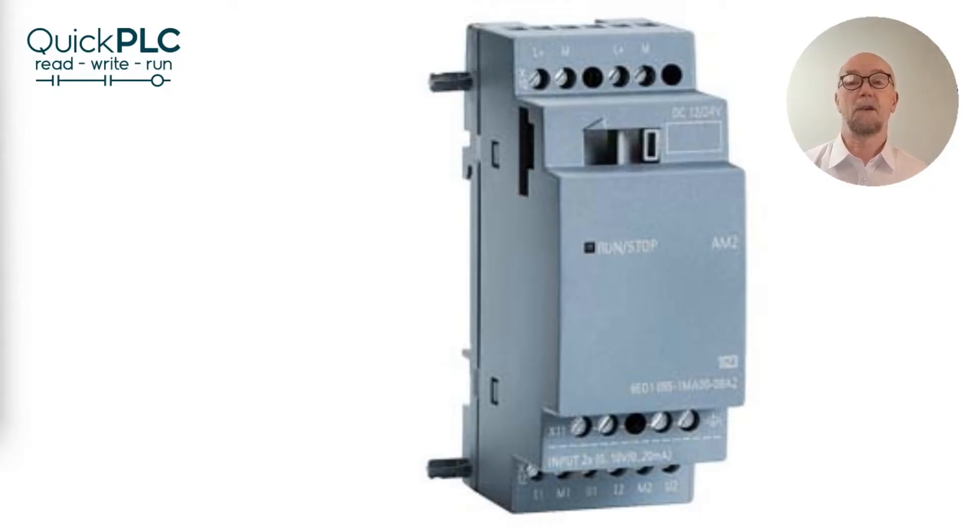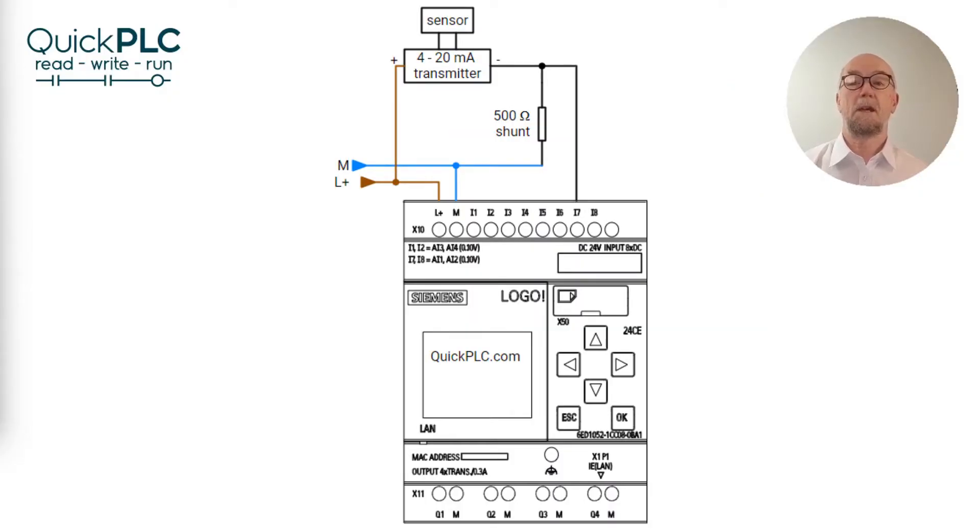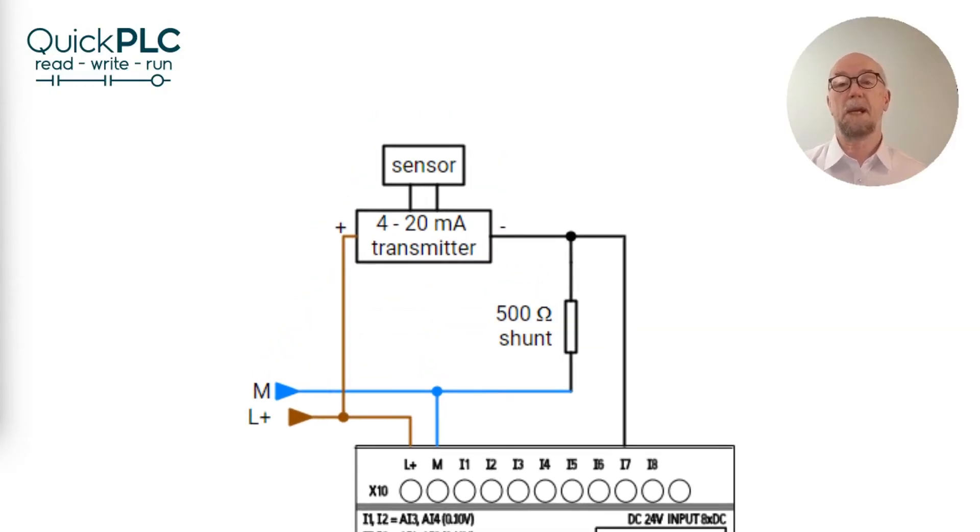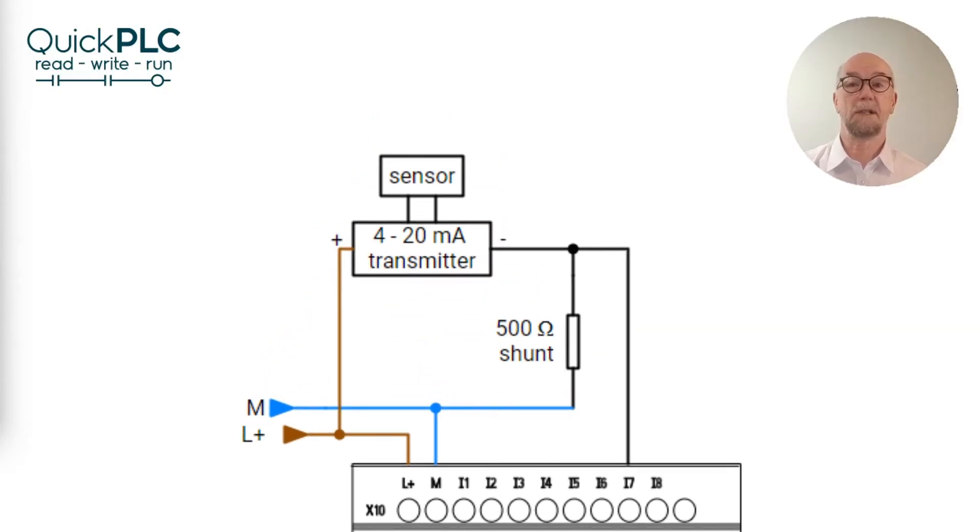The Logo range of components includes add-on 4 to 20 milliamp modules but if you have the basic module inputs to spare and you don't need electrical isolation from the digital inputs then we can use a resistor to convert from milliamps to volts. We can convert a 4 to 20 milliamp signal to 10 volt input by using a resistor. From Ohm's law we know that 10 volts at 20 milliamps will need 10 divided by 0.02 which equals 500 ohms.